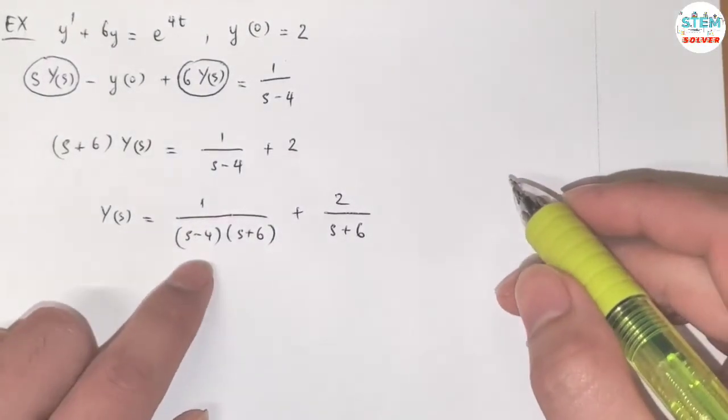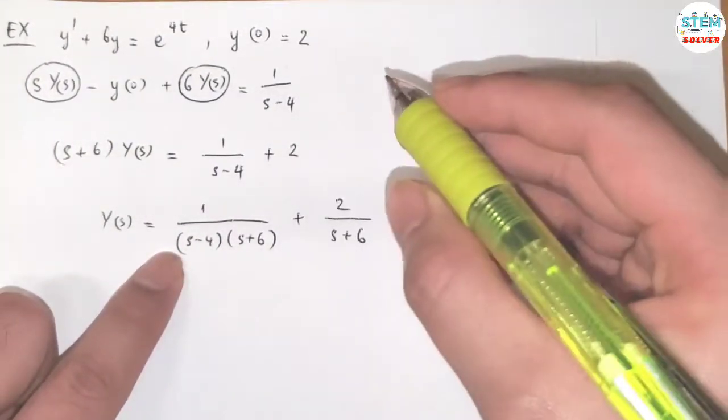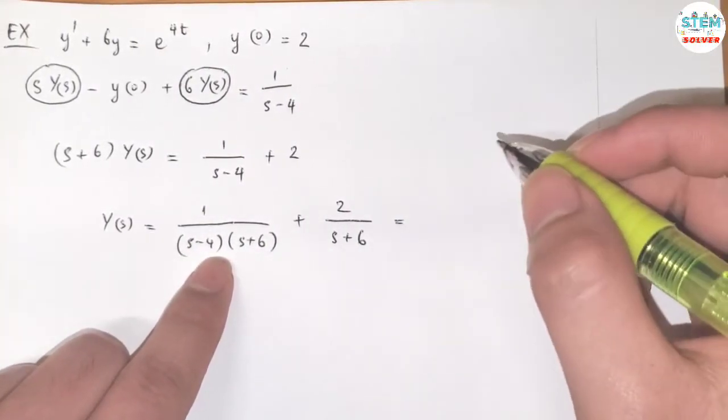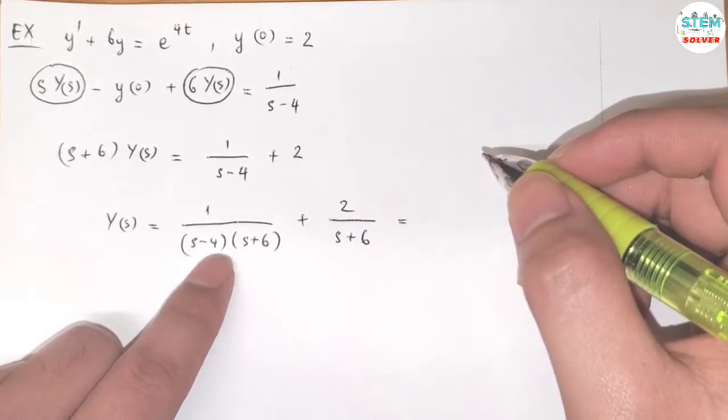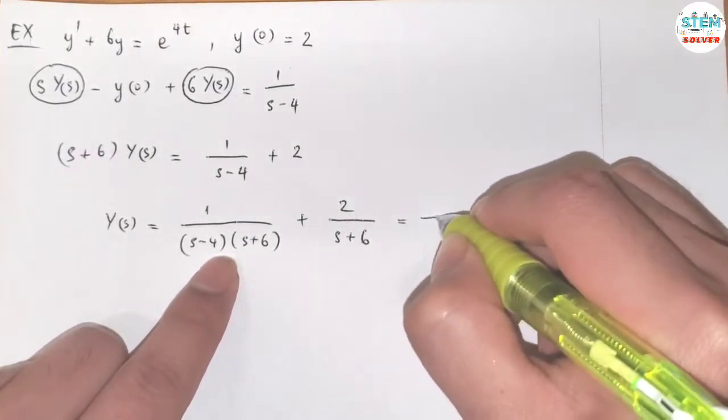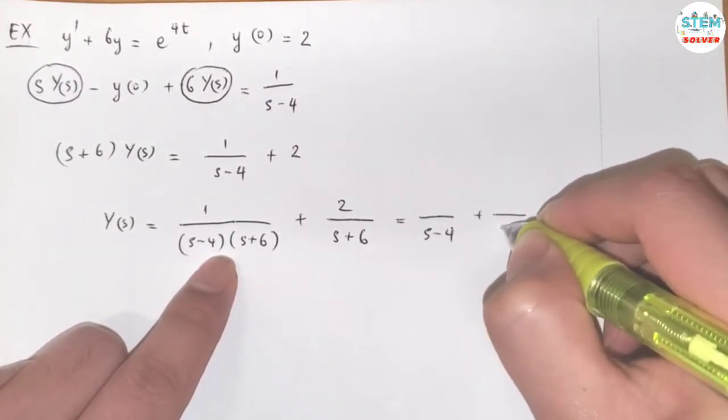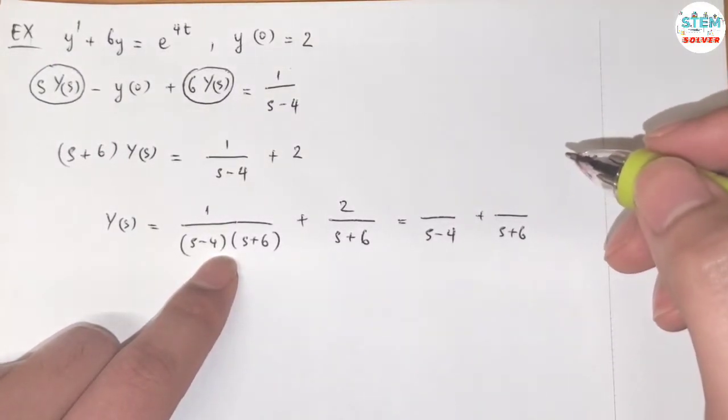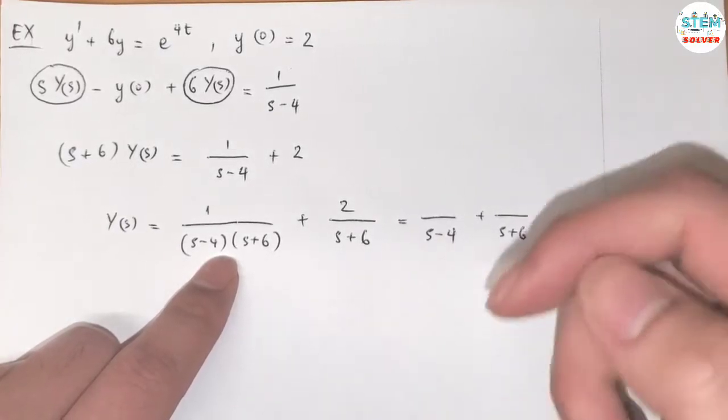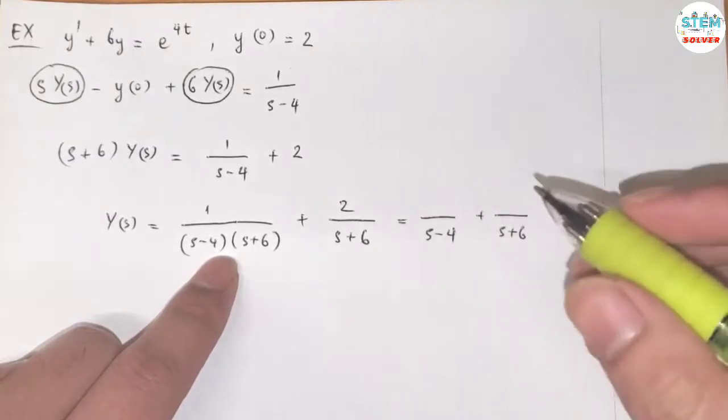Now, we need to find the inverse Laplace transform of this and this. So for this one, I'm going to use partial fraction decomposition method to find its fractions. Instead of going through the process of finding it, I'm going to use a shortcut here. So for this one, I'm going to have something over S minus 4 plus something over S plus 6. By the way, if you haven't had a chance to watch the video that I made about finding partial fractions in less than 30 seconds, I'll put the link in the upper right corner so you can go there to check it out.